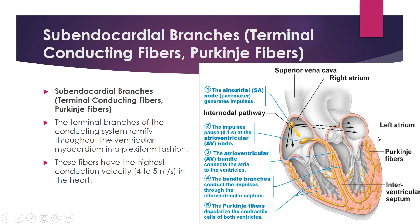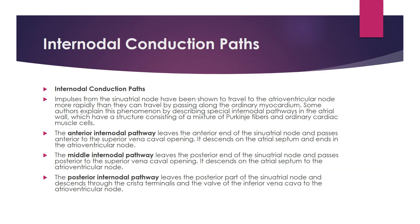The fifth component is the subendocardial branches, also called the terminal conducting fibers or Purkinje fibers. They are subendocardial — located below the endocardium. The terminal branches of the conducting system ramify throughout the ventricular myocardium in a plexiform fashion. These fibers have the highest conduction velocity in the heart, about four to five meters per second.